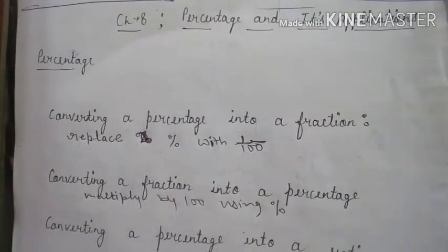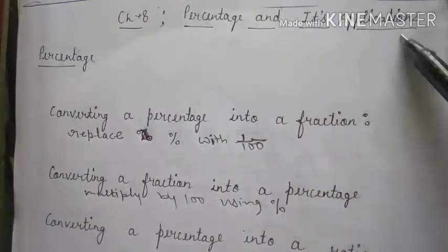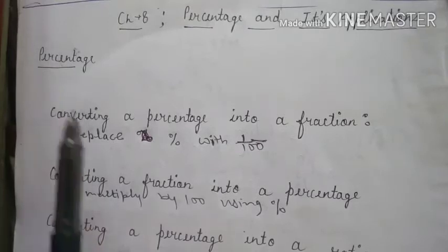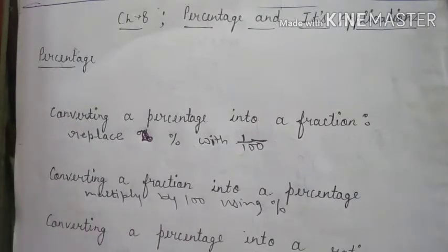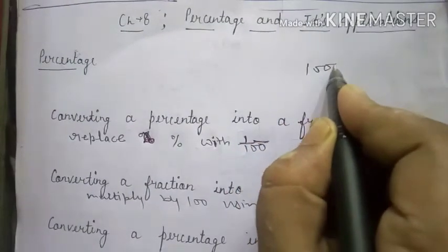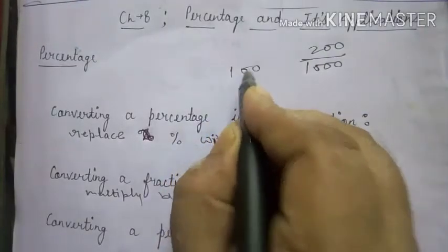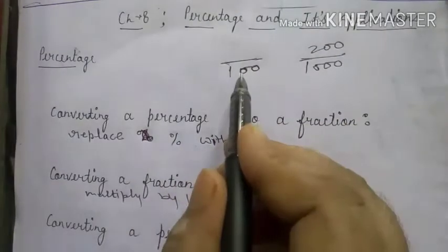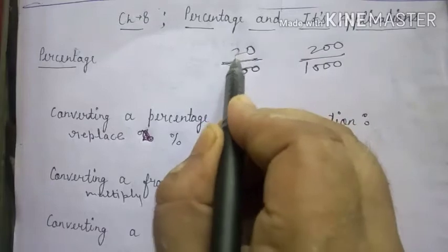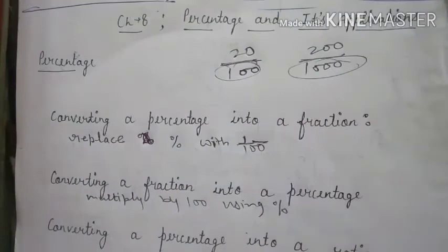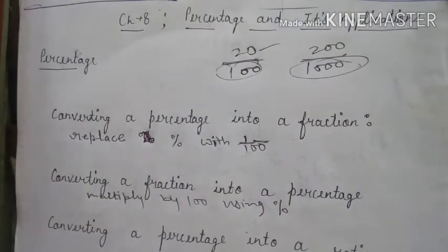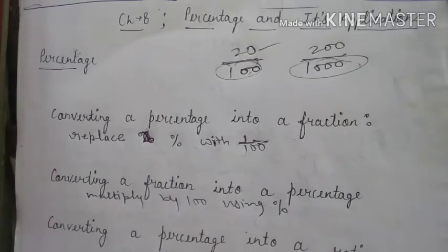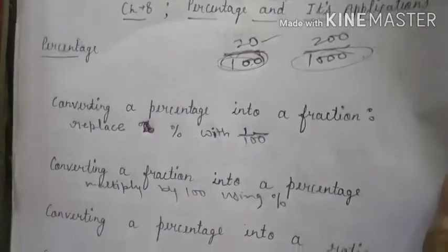Hello everyone, today we are going to study Chapter 8: Percentage and its Applications. First of all, what is percentage? Percentage is the numerator of a fraction with denominator 100. Percent means per hundred or out of hundred. For example, if 1200 marks total, then 100 is the denominator. Percentage means out of hundred.